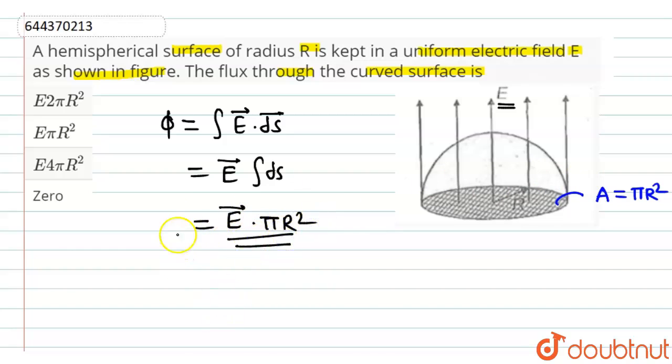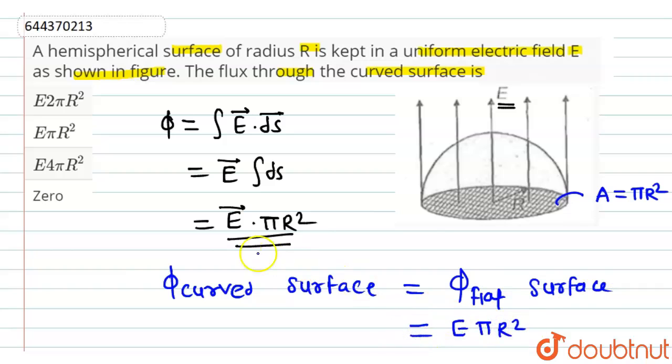So this will be the value of net flux because here flux passing through the curved surface is equal to the flux passing through the flat surface, which will be equal to E into πR². So correct answer for our question is option number 2.